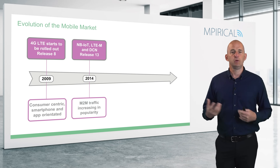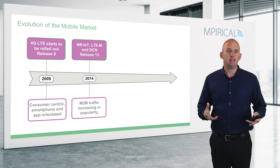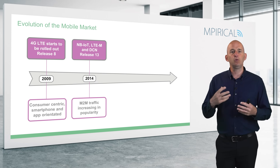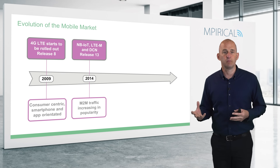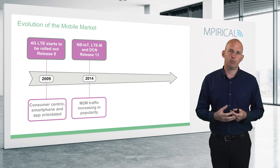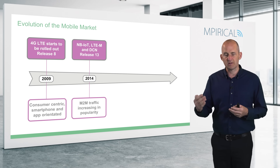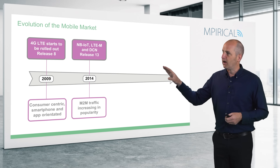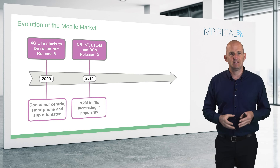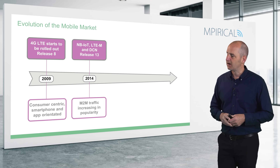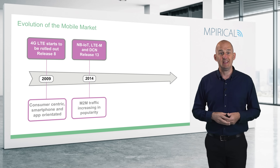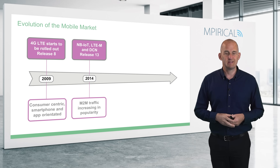An attempt was made to introduce cellular IoT to LTE. We have the cellular IoT LTE technologies of Narrowband IoT and LTE-M, and this allowed mobile service providers to start to move away from the consumer market and to start to bring on board other organizations, other customers and other market verticals as an extra revenue stream. The acronym DCN — Dedicated Core Networks — is relevant here. Cellular IoT was really introduced to LTE in release 13, quite a long time after LTE was originally introduced.